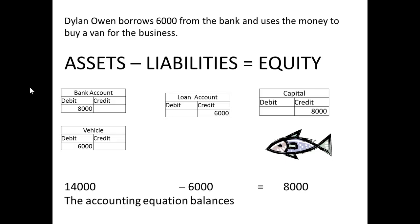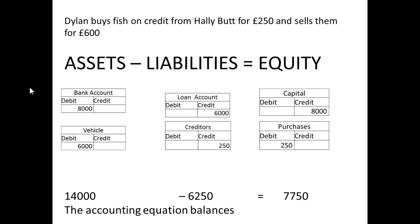We now have £8,000 plus £6,000, that's £14,000 as assets. Subtract the £6,000 which is our liability: £14,000 minus £6,000 equals £8,000, which is the equity. You can see the accounting equation is still balancing.